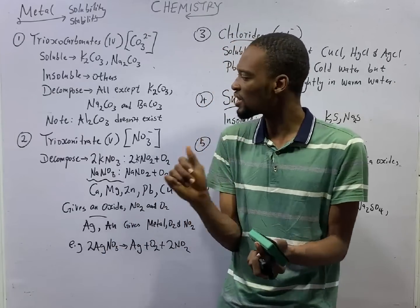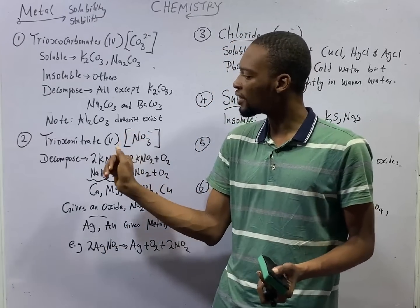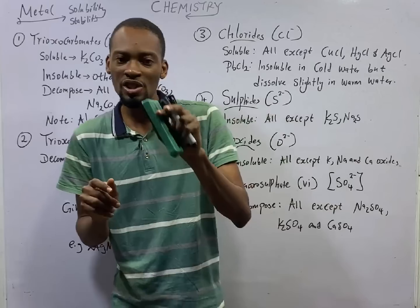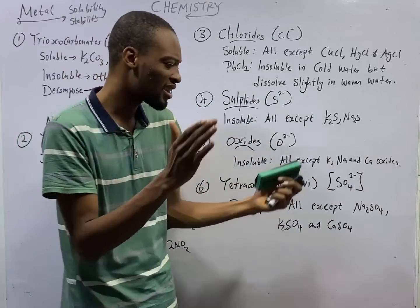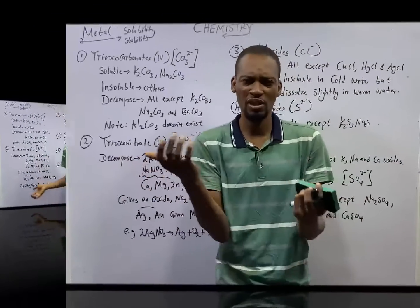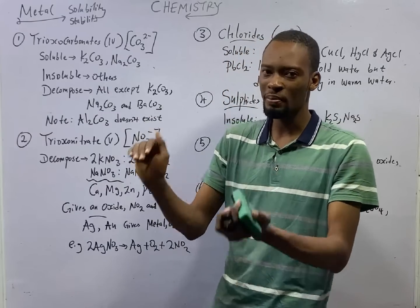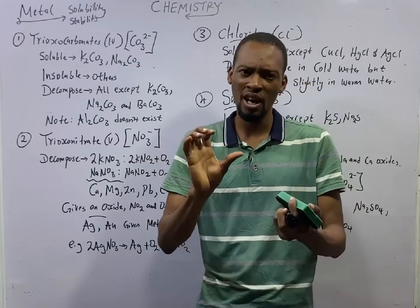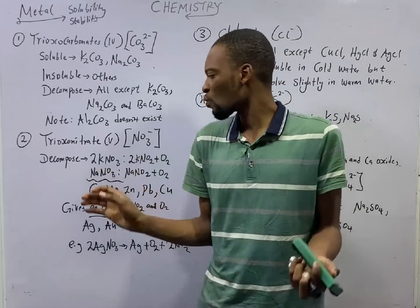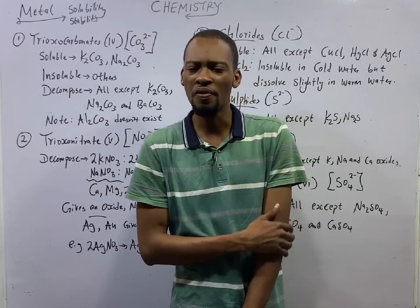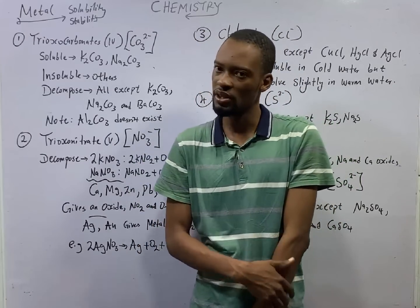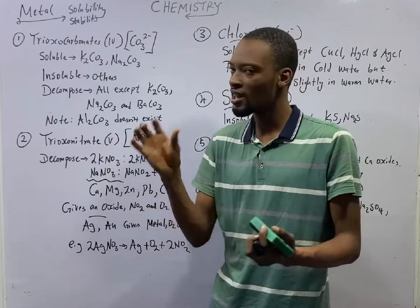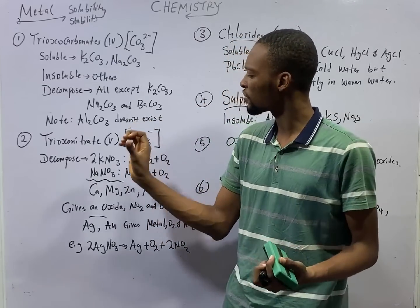Take note: any time you see Al2CO3 — that is aluminium trioxocarbonate — that answer is wrong, because aluminium trioxocarbonate does not exist. There is nothing like aluminium trioxocarbonate. Next, trioxonitrate(V), with the NO3 minus ion. When metallic ions react with NO3 minus, we form the trioxonitrate(V) salts. When potassium reacts with NO3 we have potassium trioxonitrate(V); we also have sodium trioxonitrate(V), calcium trioxonitrate, and so on.